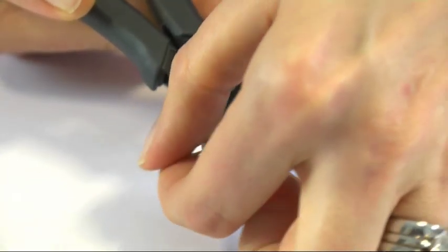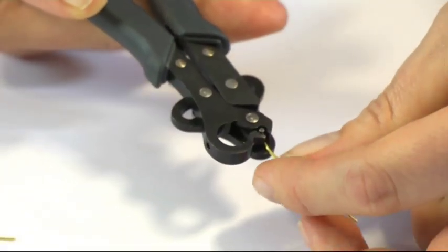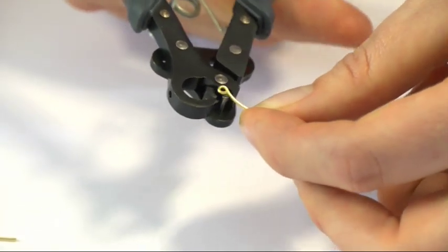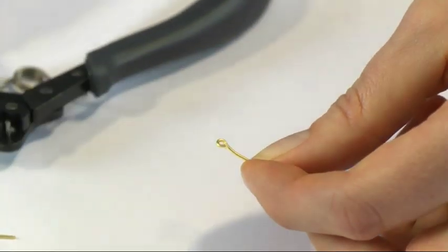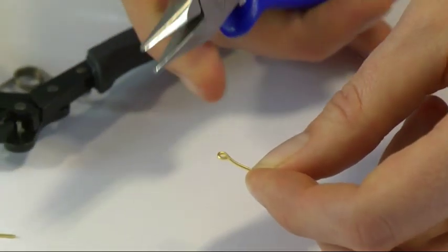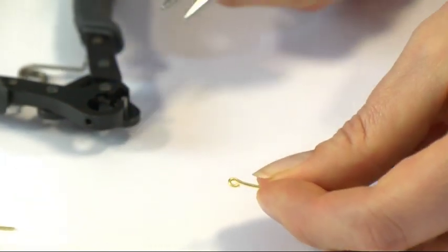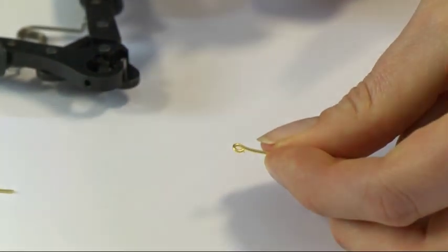Remove the excess and then gently open the tool and then using flat nose pliers just to straighten it out, close it up, whatever you need and that is your eye pin.